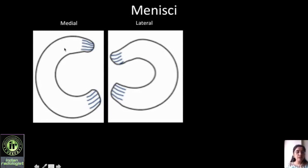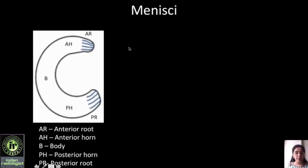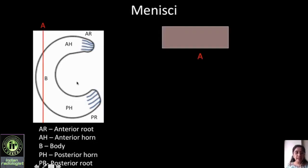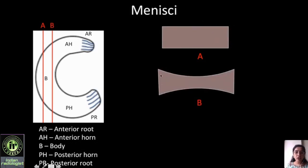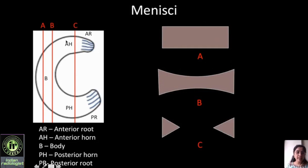Before we look at the MRI images, a short discussion on menisci. We have the medial and the lateral meniscus; the medial meniscus has a larger C appearance whereas the lateral meniscus has a smaller C appearance. The parts of the meniscus comprise the anterior root, anterior horn, body, posterior horn, and posterior root. On sagittal sections: at the body level you see a rectangle; slightly lateral you see a bow-tie appearance; and at the most medial level you see a triangular posterior horn.